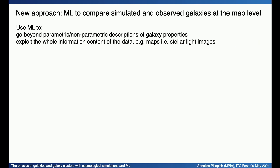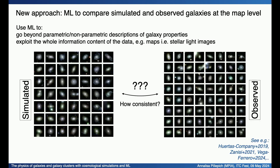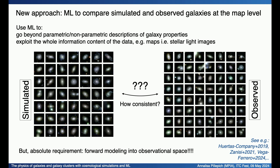I would like to propose an even different method: we can use machine learning to compare simulated and observed galaxies at the map level. This is useful because we can go beyond parametric or non-parametric descriptions of galaxy properties and exploit the whole information content of the data — for example, stellar light images or any kind of filter map. Suppose you have thousands of simulated galaxies and want to see whether they are consistent with thousands of observed galaxies — it's actually difficult to do without AI. The absolute requirement is to forward model your simulation data into observer space.